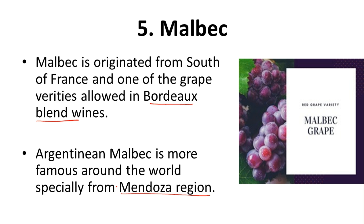So these were the grape varieties. You must know at least five white and five red grape varieties, their origins, and something about their flavor profiles. This is very important. Thank you so much — I hope you understood all these varieties. If you have any queries, you can write below in the comment section. Thank you so much for listening.